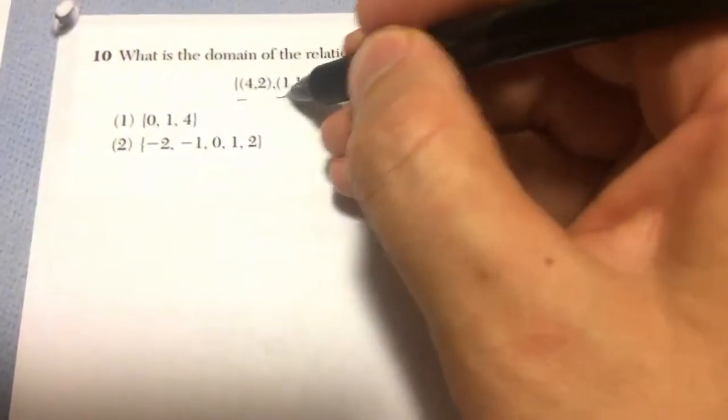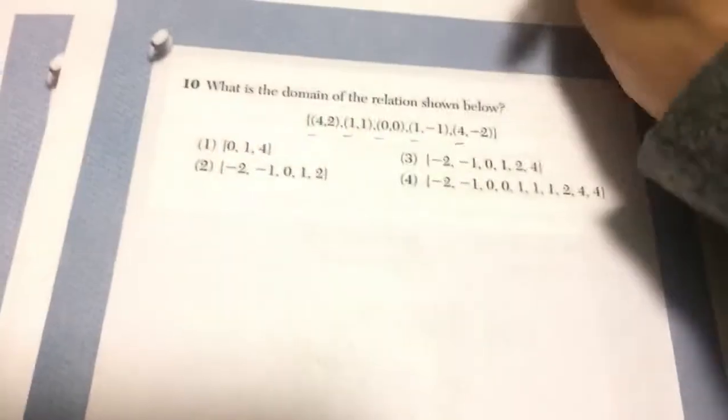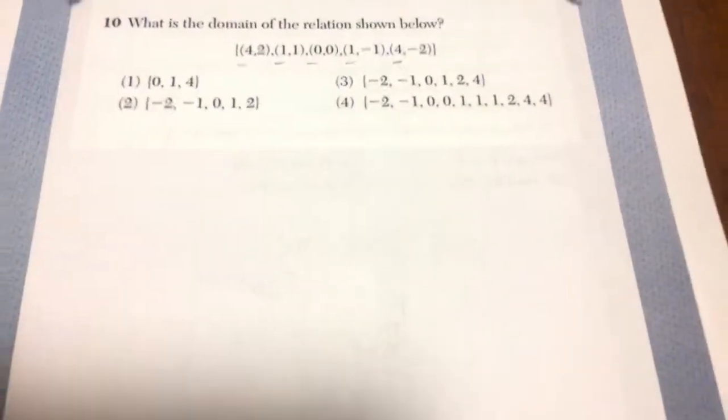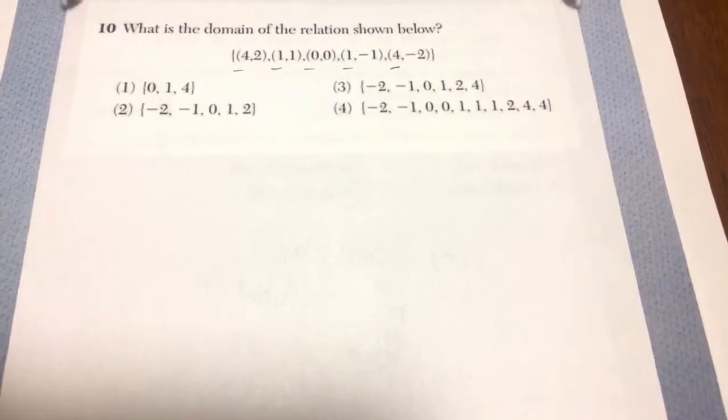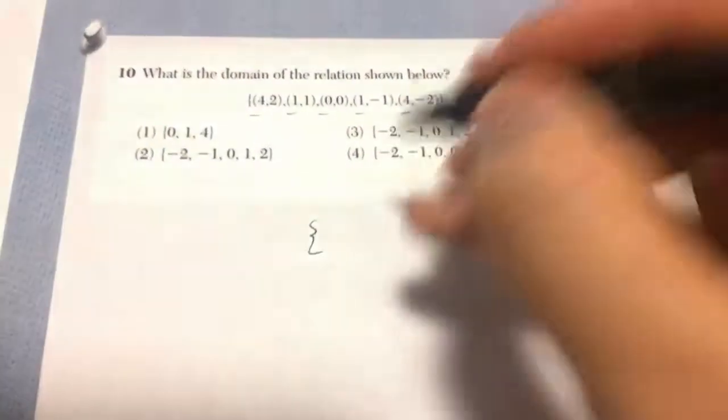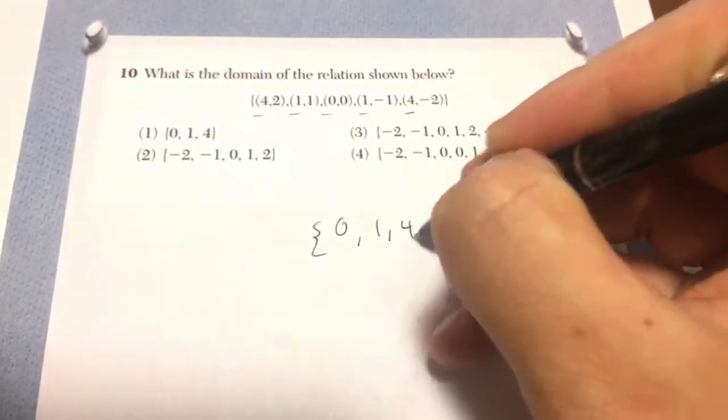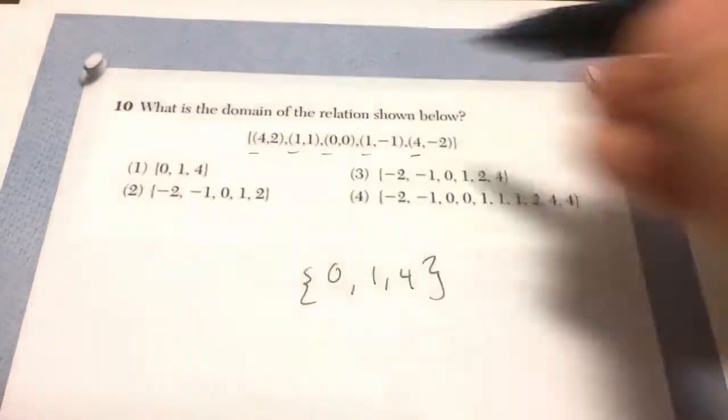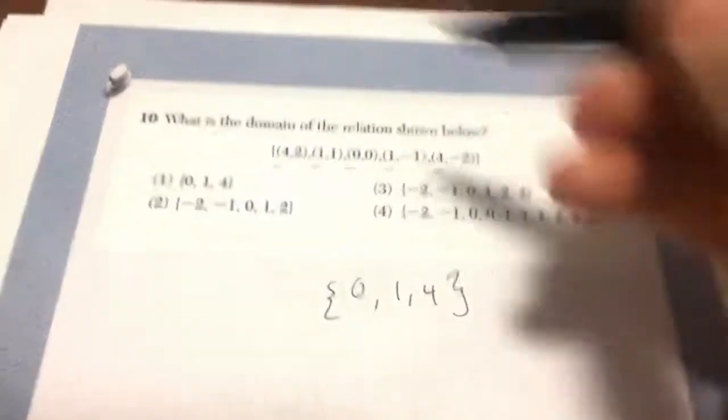In number 10, the domain is all the x values. So you see how you have 4, 1, 0, 1, and 4. Now what we're going to do here is we're going to say that it's 0, 1, and 4. All of my x values.